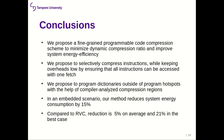We have proposed a programmable code compression scheme to minimize the dynamic compression ratio and improve system energy efficiency. Our proposal is to selectively compress instructions while keeping overheads low, fetching each instruction with only one fetch. We also program dictionaries outside of program hotspots with the help of our compiler analysis. In an embedded scenario, our method reduces system energy consumption by 15%. Compared to the RISC-V compressed extension, the reduction in system energy consumption is 5% on average and 21% in the best case. Thank you for your attention.